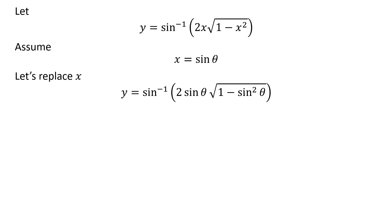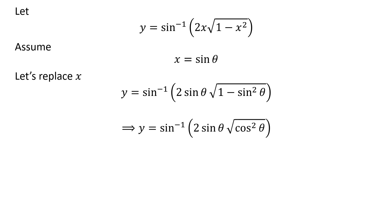Replacing x by our assumed value in y gives us y is equal to inverse sine of 2 times sine of theta times square root of 1 minus sine squared of theta. We know 1 minus sine squared of theta is equal to cosine squared of theta, so y is equal to inverse sine of 2 times sine of theta times square root of cosine squared of theta.